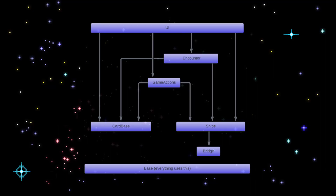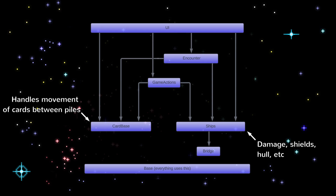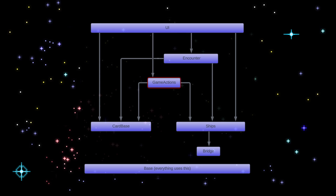This is a diagram of how things looked when I started using the namespaces. The arrows indicate a using statement. In this example card base is the layer that has all the logic for how the cards move between the piles like the hand or the discard pile. Ships has the logic of how the ships work and game actions has the logic for what happens when you play a particular card like firing a weapon. So the game actions namespace knows about the card base and ships layers because it needs to handle the playing of the cards and the implementing of the results on the ships. But card base and ships don't know about game actions, and card base and ships don't know about each other.